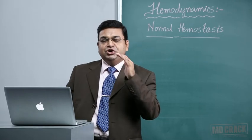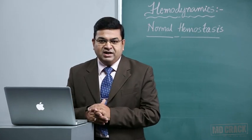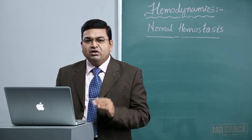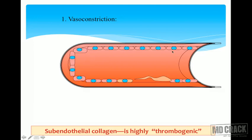Remember, once there is an injury to the endothelial cells, the first and foremost mechanism to prevent excess blood loss is transient vasoconstriction, due to a neurohumoral reflex mechanism. It does not last very long — it is very short term. When endothelial cells are ruptured, this area of injury exposes the subendothelial collagen, which is highly thrombogenic — it helps the formation of a thrombus and attracts more and more platelets.